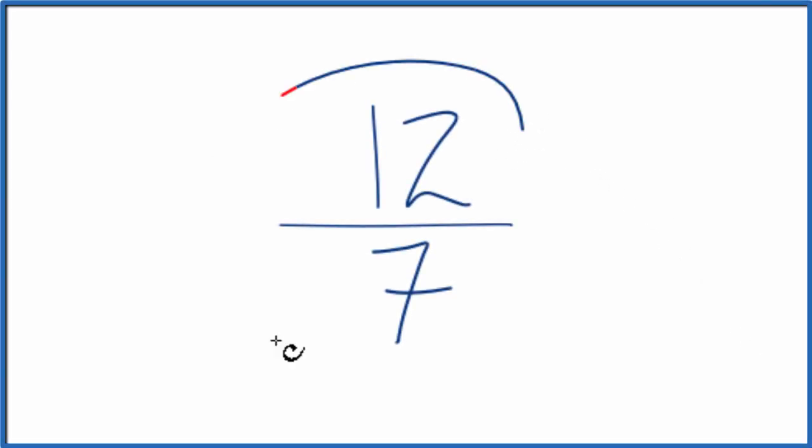Let's simplify the fraction 12 sevenths. What we want to do is find another fraction that's equivalent. It has the same value as 12 over 7, just that we've simplified or reduced it down to its lowest form.